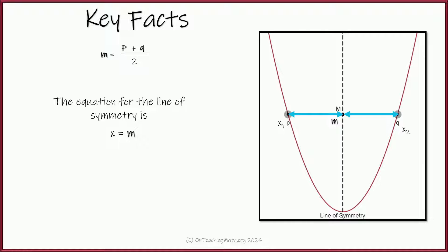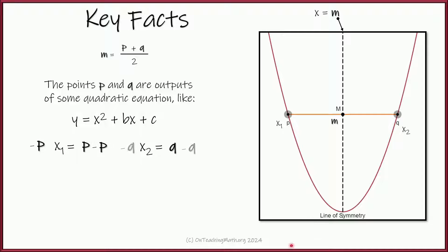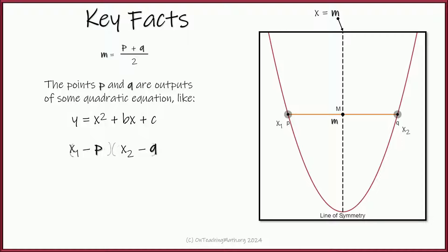The line of symmetry is x equals m — x equals the number, which is a vertical line. Now we know there are two values true for our equation x squared plus bx plus c: x1 equals p, and x2 equals q. If we subtract p we get x minus p equals 0, and subtracting q gives x minus q equals 0. If we multiplied those two things together, that's where our quadratic equation comes from — it's solving by factoring in reverse.